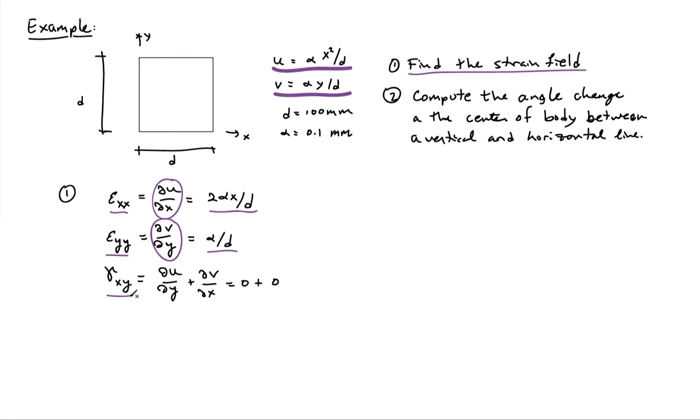The shear strain gamma xy is the mixed partials here. So the derivative of u with respect to y plus the derivative of v with respect to x. That gives me 0 plus 0, so that equals 0.